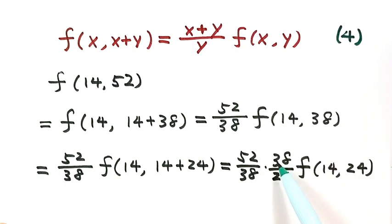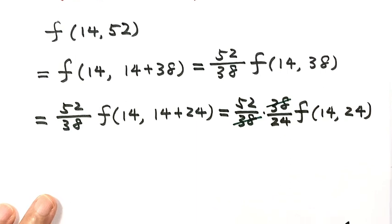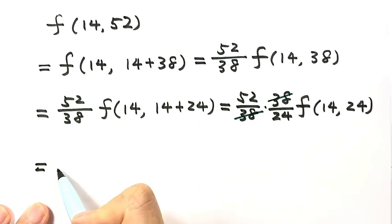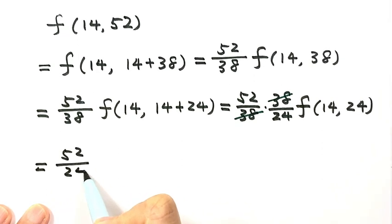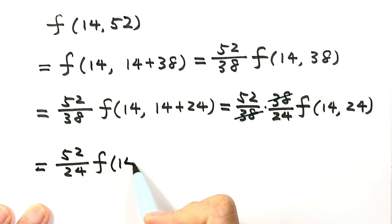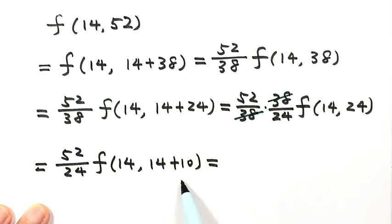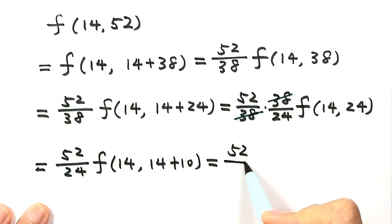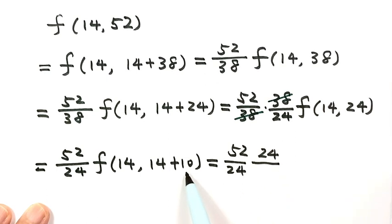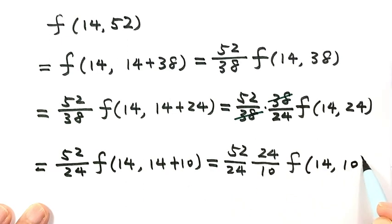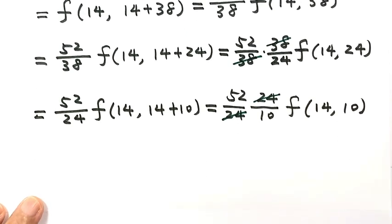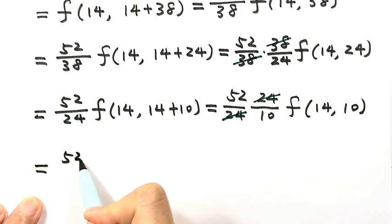The 38s cancel out in our running product. For 24, we can write it as 14 plus 10. Applying Identity 4 again gives us 52 over 10 times f(14, 10). However, now we cannot use Identity 4 again because the second number, 10, is smaller than the first number, 14.